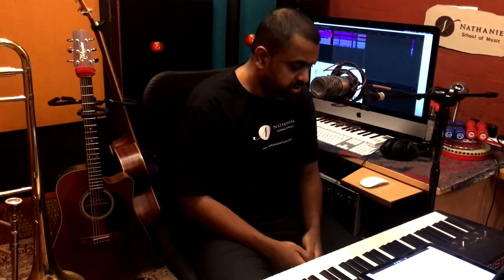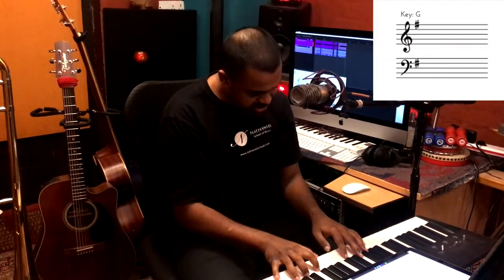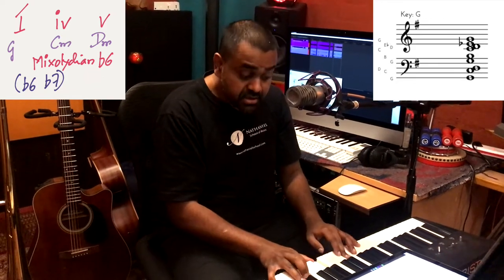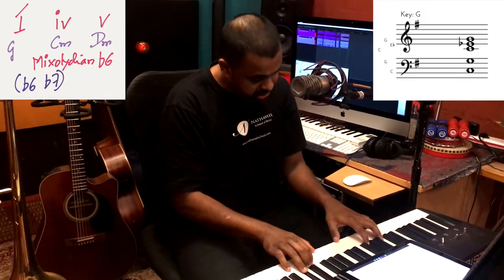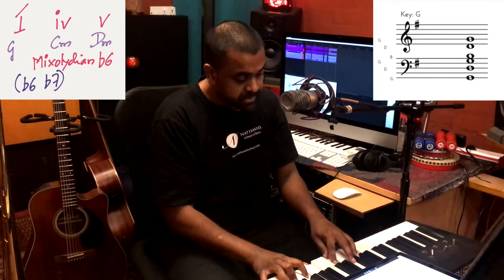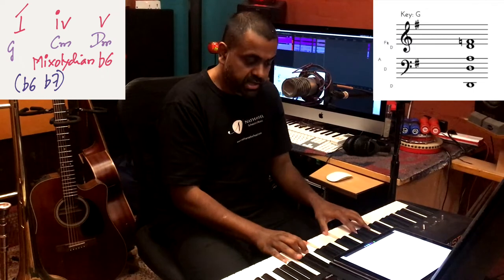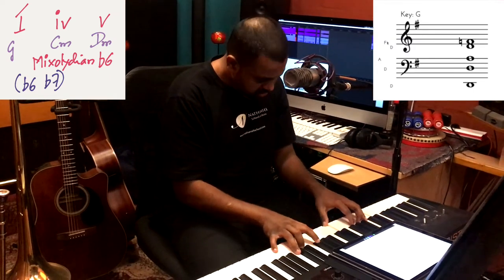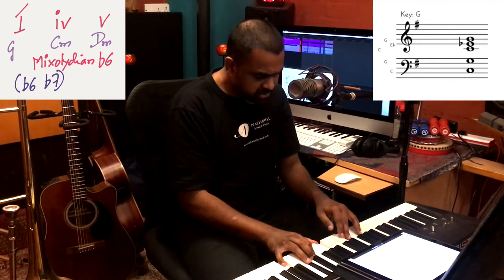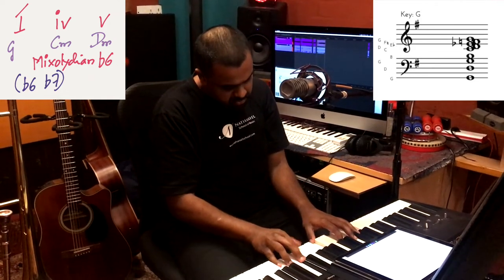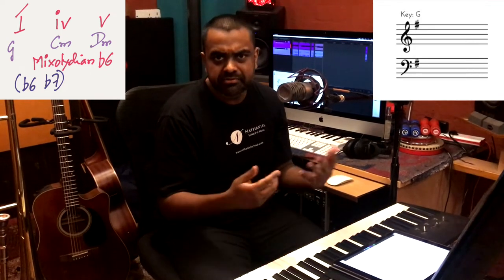Another one is where you take one major, then go to four minor, and then five minor — back to one major. That's major one, minor four, and minor five. You can call this like a Mixolydian flat six scale.